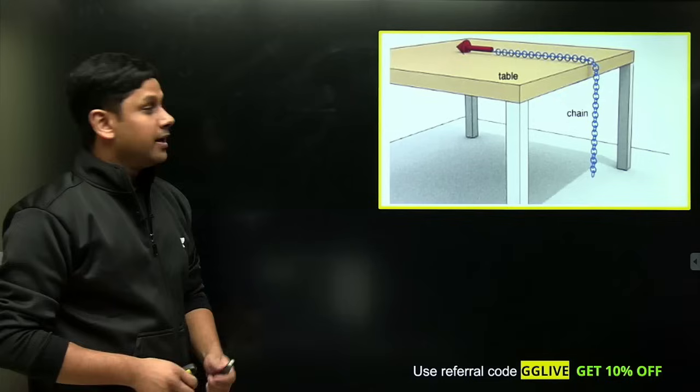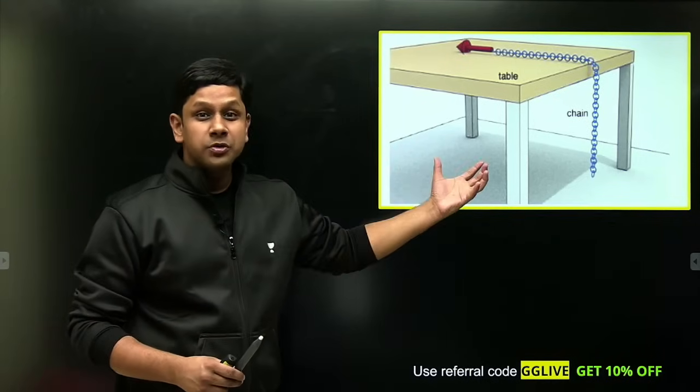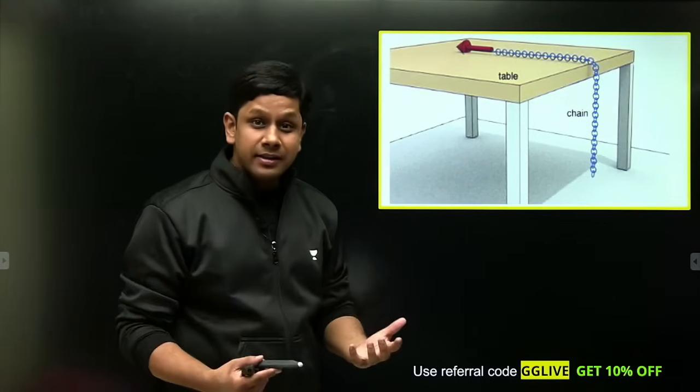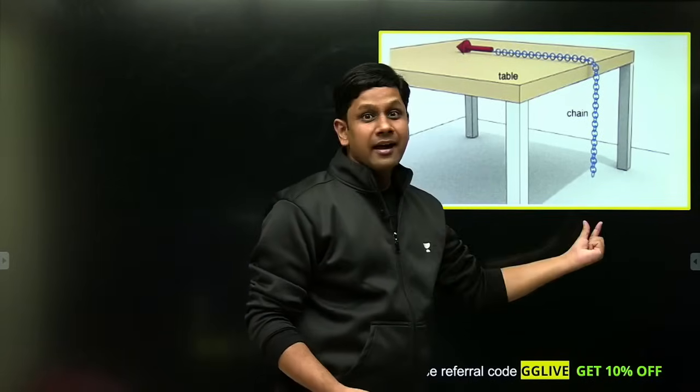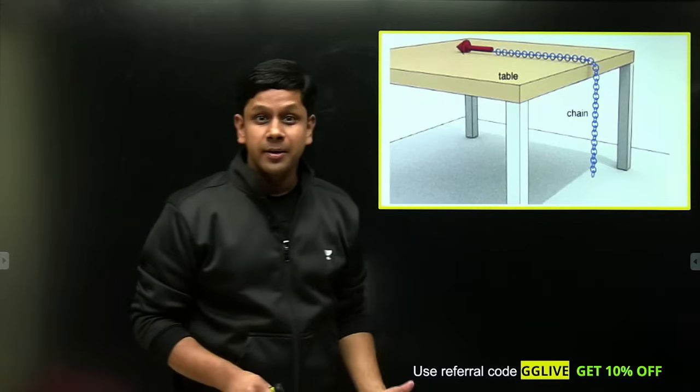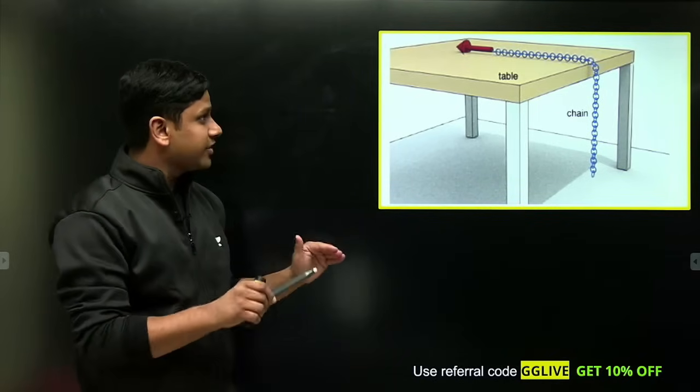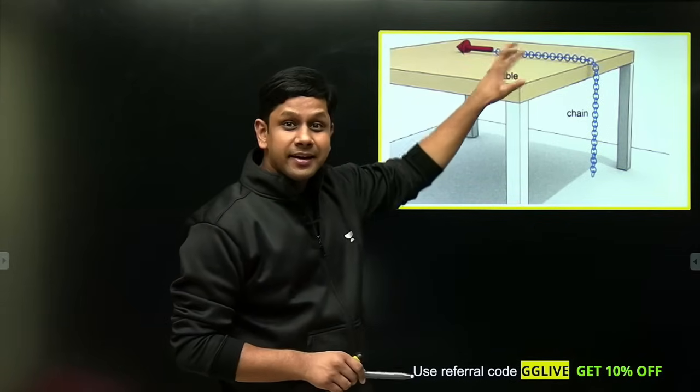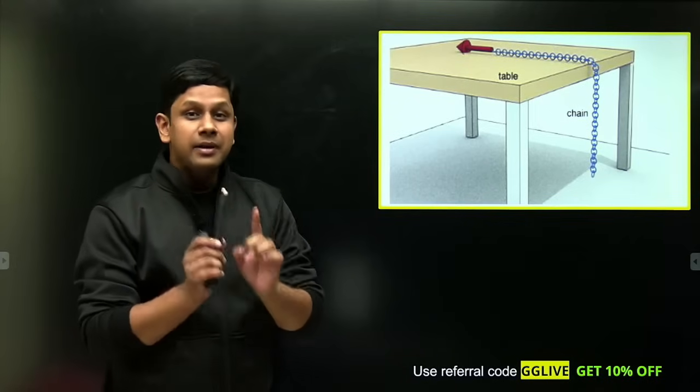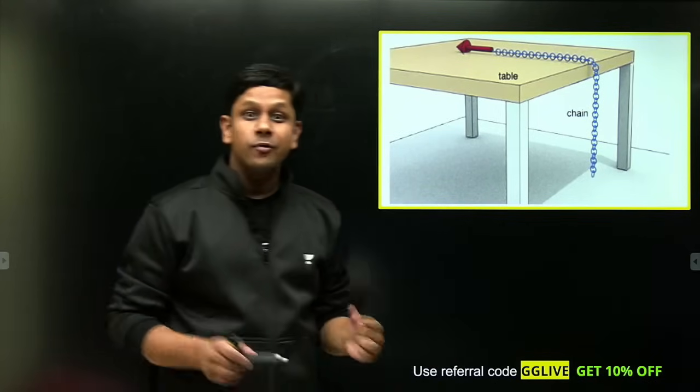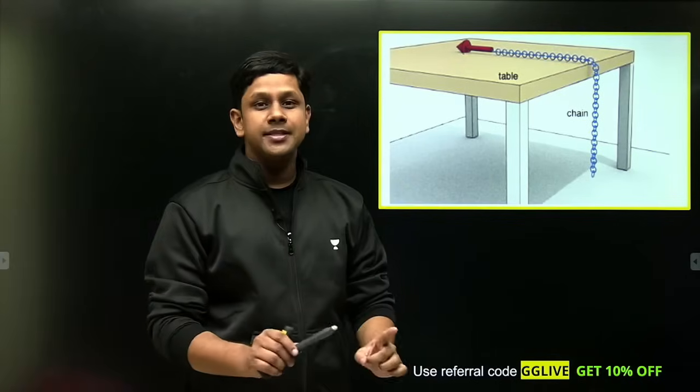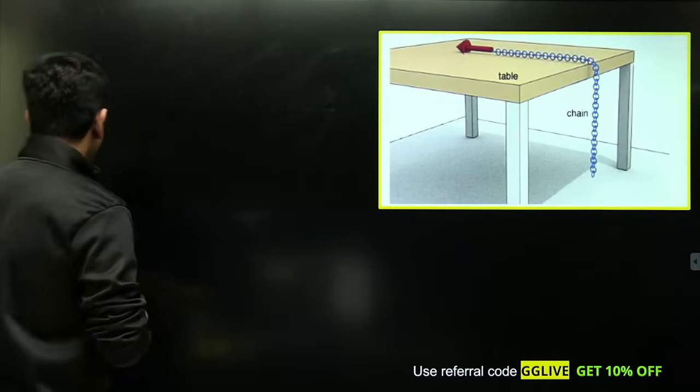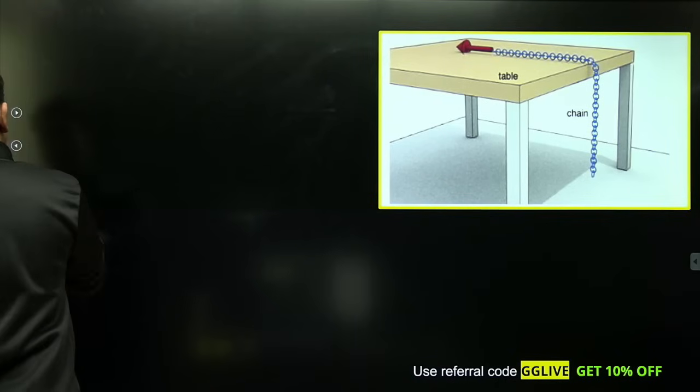In these chain problems, you are given: what is the maximum length or maximum fraction of length of chain that can hang without making the chain slip on the table? So the simple concept here is that friction force will try to keep the chain on the table.